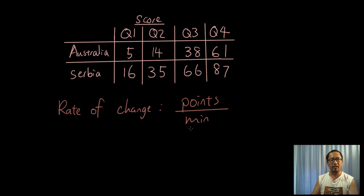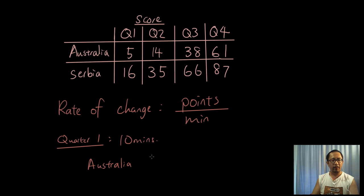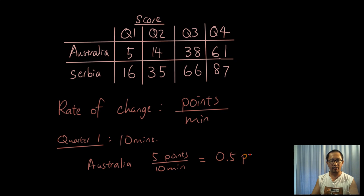I want to find out how many points a team can score per minute. Let's do the first quarter first. In quarter one, which is only 10 minutes, Australia scored 5 points over 10 minutes. So if you do 5 divided by 10, that's only 0.5 points per minute — we were scoring 0.5 points per minute.